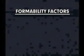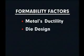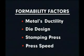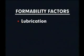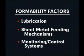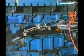Factors influencing formability include the ductility of the metal, the die design, the stamping press, press speed, lubrication, the sheet metal feeding mechanisms, and monitoring systems and controls which safeguard and synchronize the operation. Because of these various factors, formability differs from one part or operation to the next.